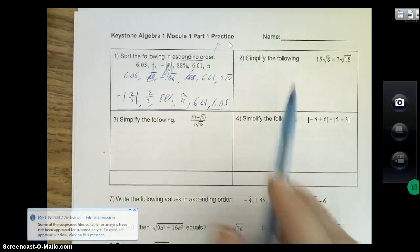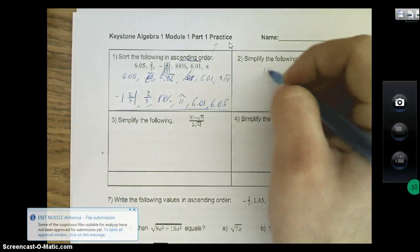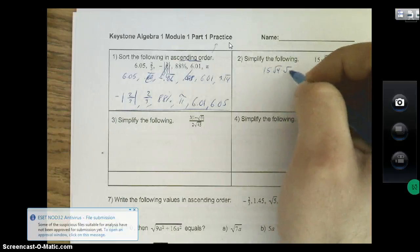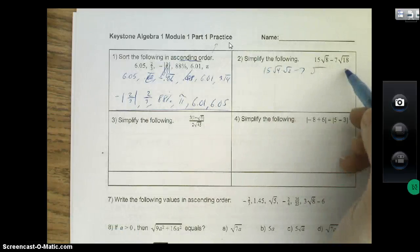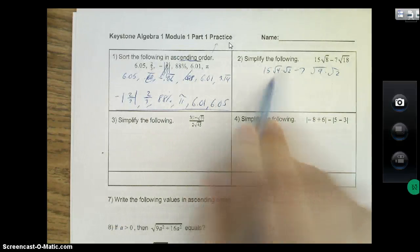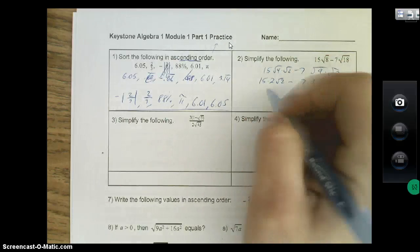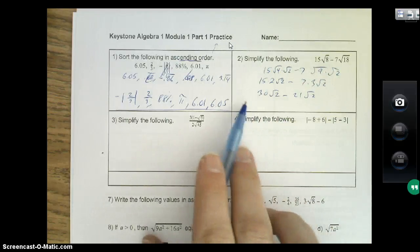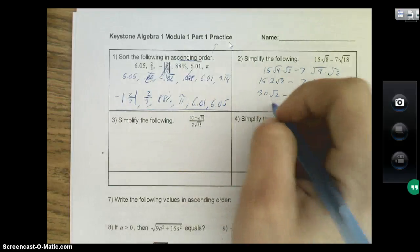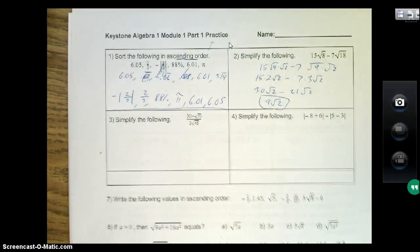All right, so simplify the following: 15 root 8 minus 7 root 18. You're breaking these down to perfect squares. So the square root of 8 can be broken down to root 4 times root 2. Over here, root 18 can be root 9 times root 2. The square root of 4 is 2, square root of 9 is 3. So 30 root 2 minus 21 root 2—you can multiply numbers outside the radicand—30 minus 21 gives us 9 root 2. Boom, boom goes the dynamite.